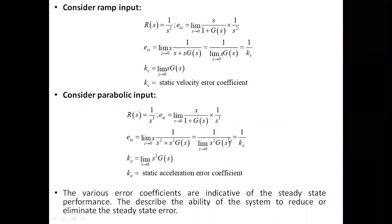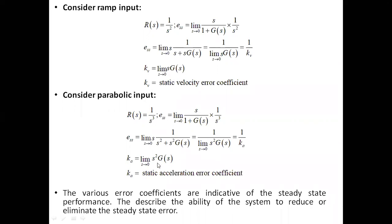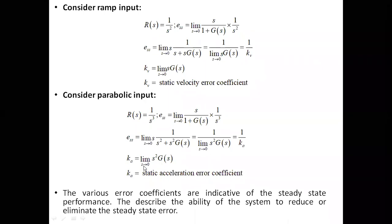Similarly, for parabolic input, R(s) = 1/s³. Applying the same process, the steady state error becomes 1/K_a, where K_a = limit s→0 of s²·G(s), called the static acceleration error coefficient. So the three error coefficients are K_p, K_v, and K_a.